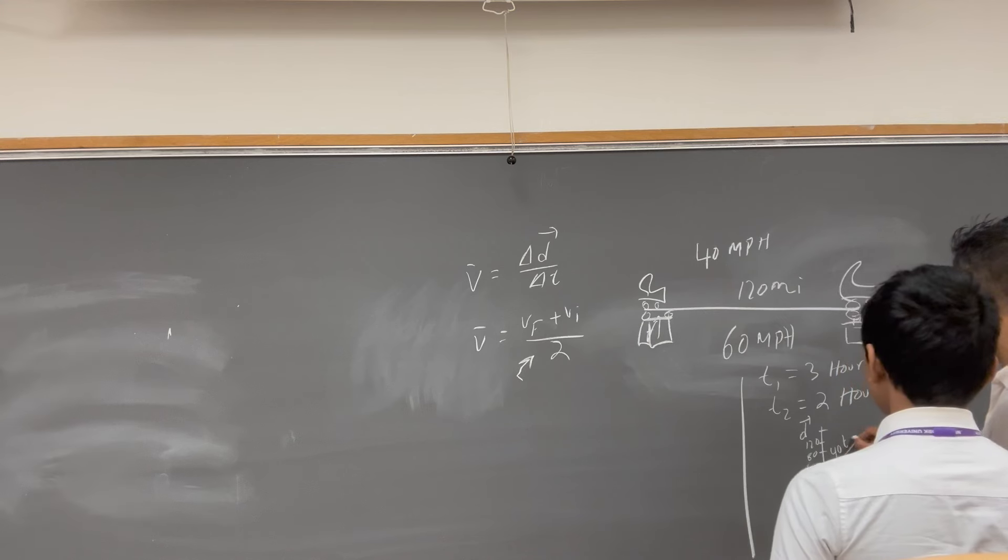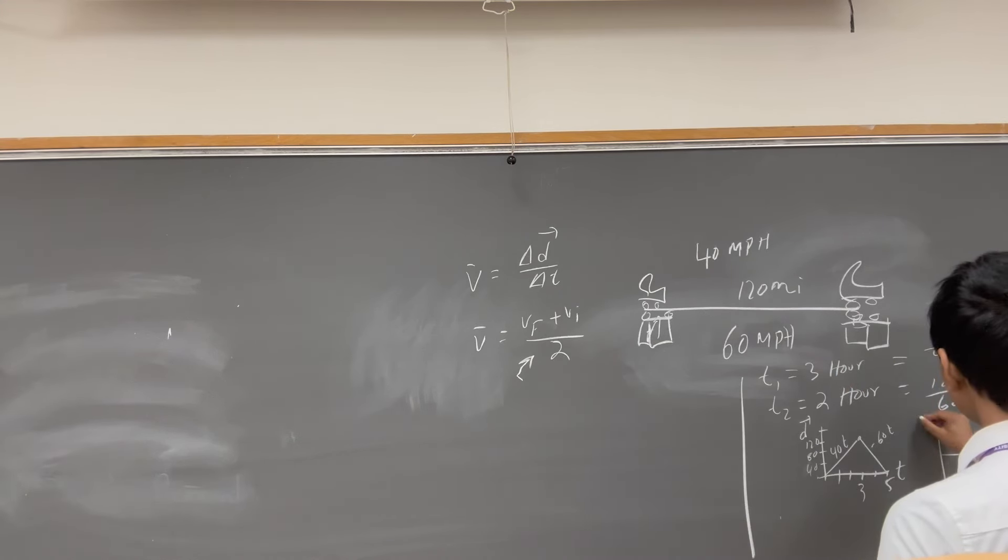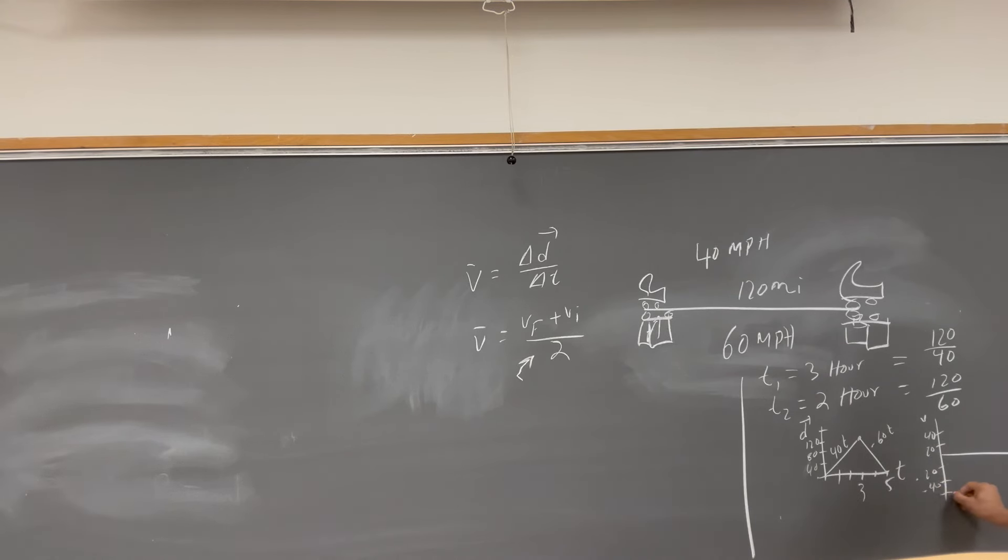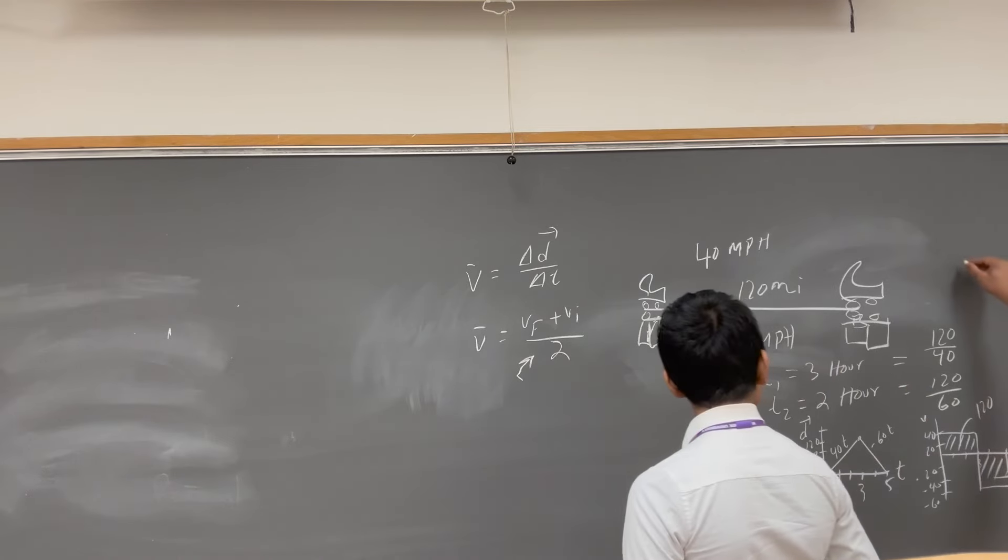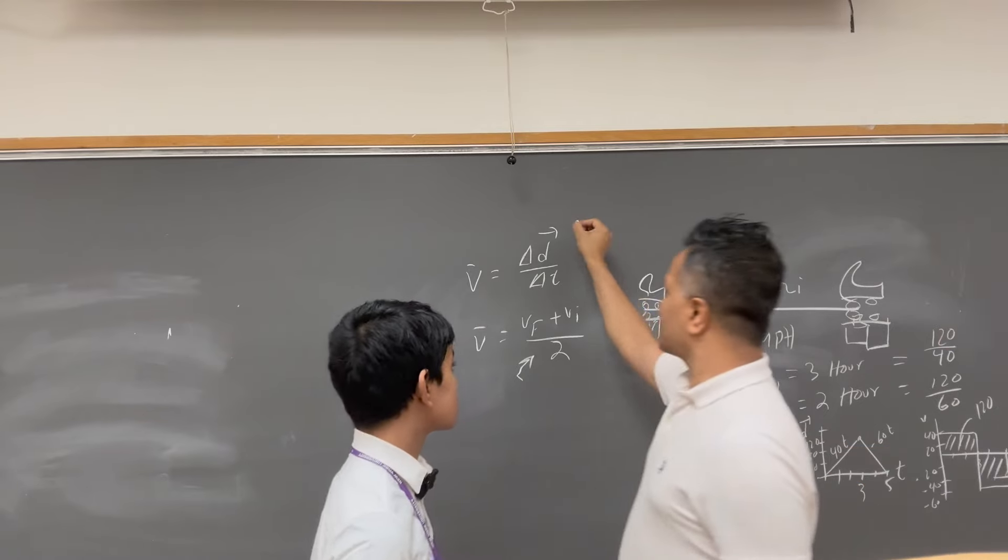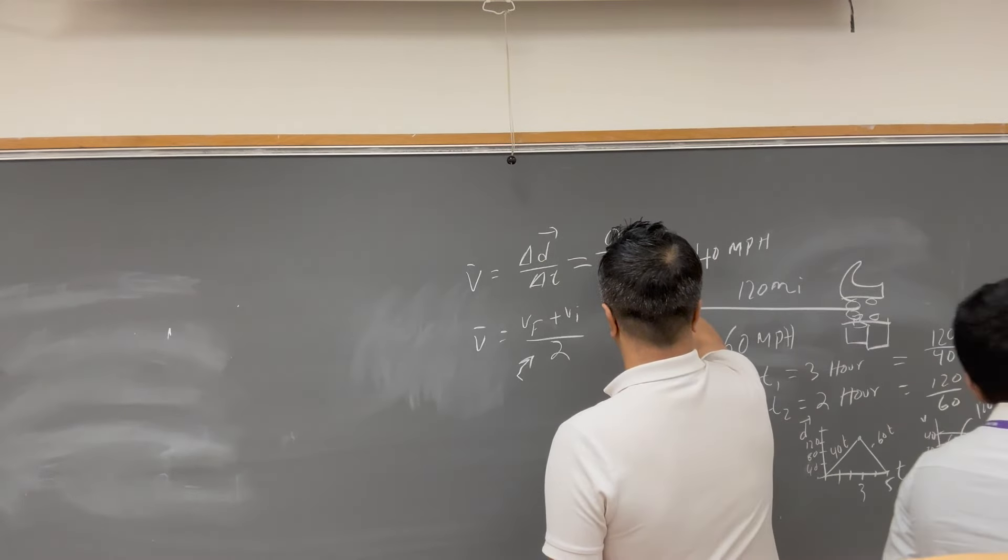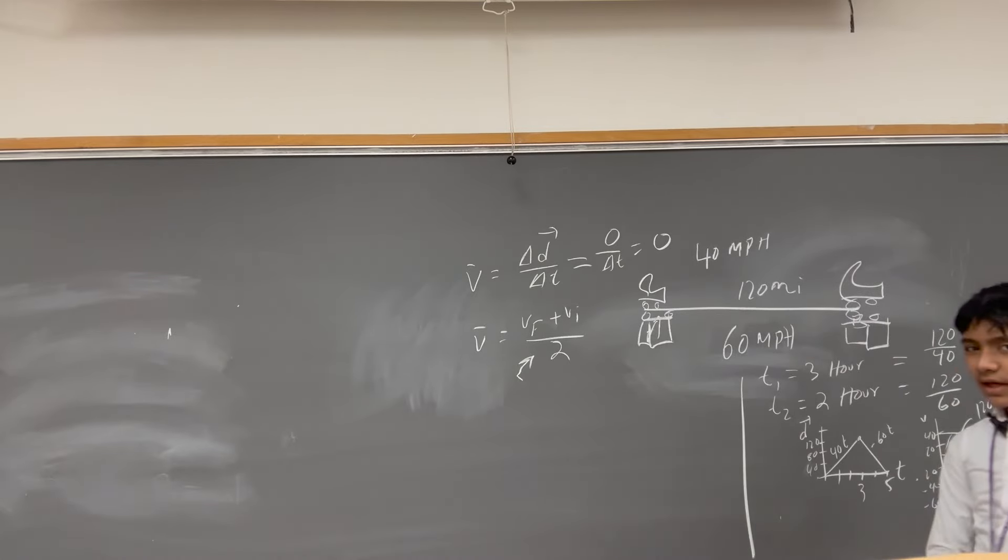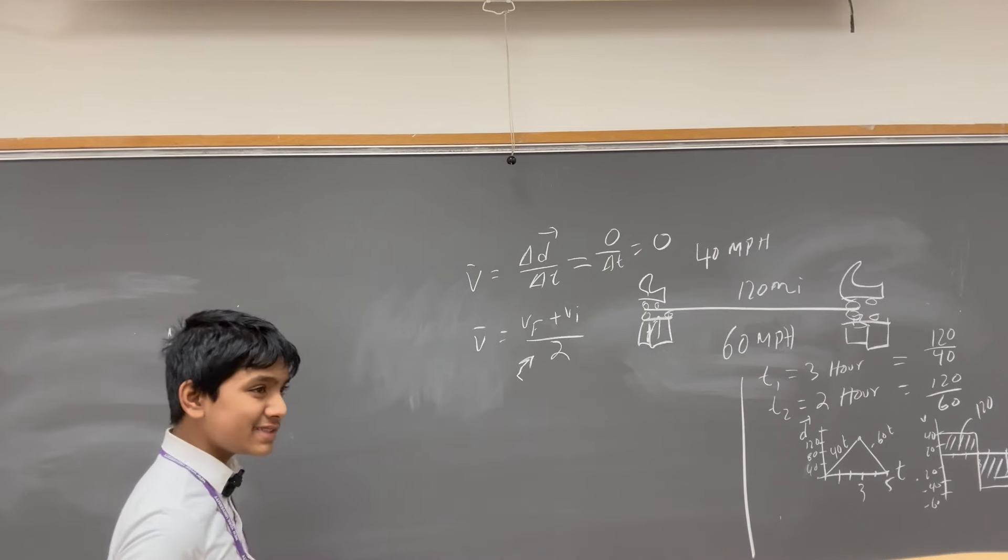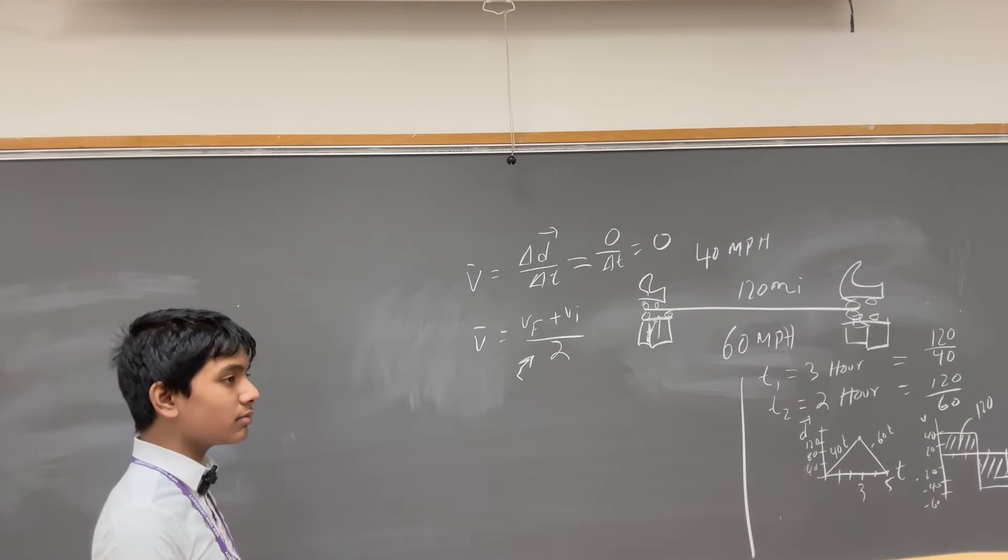So, if you do the VT graph, what do you get? This is 20, this is 40, this is negative 20, this is negative 40, negative 60. So, then from 1 to 3 hours, this is 120. And 3 to 5 hours, this is negative 120. Therefore, the average velocity is VF minus VI. The average velocity is 0. So, do you agree with this? Yeah. So now, this second one is kind of rubbish for this kind of problem. Not going to lie.